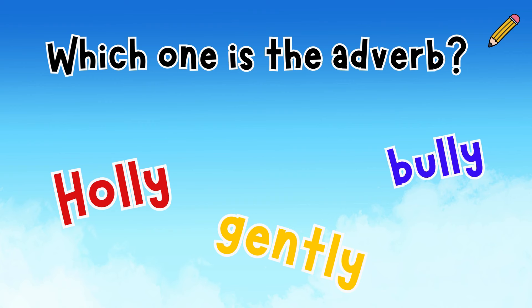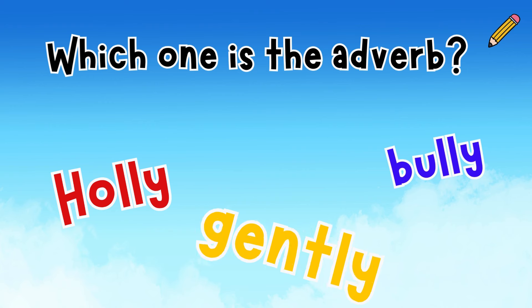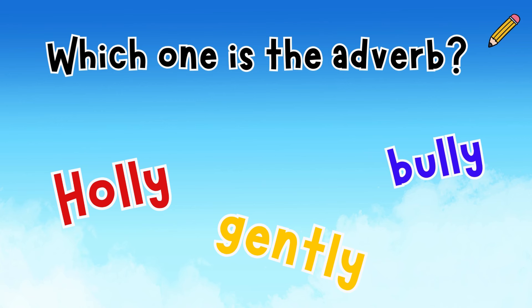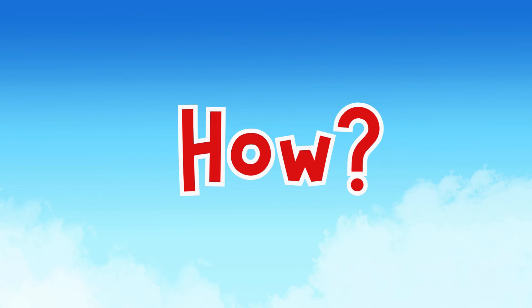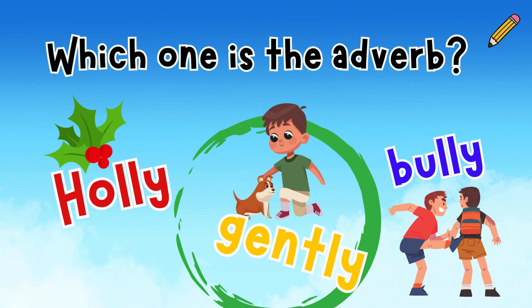Which one is the adverb? Is it holly, gently, or bully? Remember to think of the question how — how was something done? We can't do something holly, and we can't do something bully. How was it done? It was done gently. He pet the dog gently.